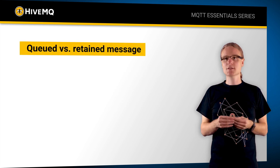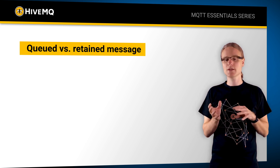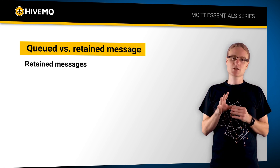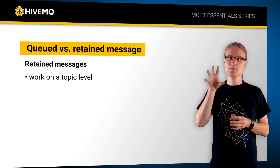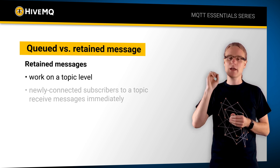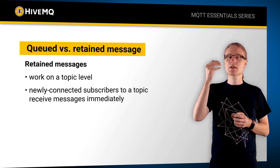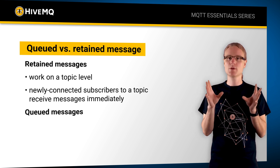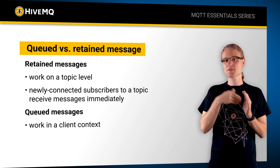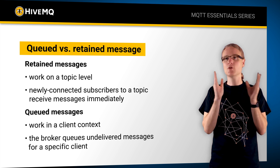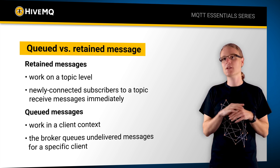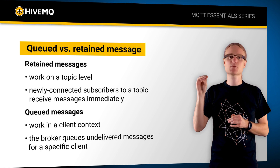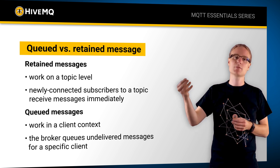A common question is when to use queued messages versus retained messages — these are really two distinct concepts. Retained messages operate at the topic level and don't care about client context at all; every new subscriber will get the retained message delivered directly. Queued messages, by contrast, are always per-client context — if a client has a persistent session and goes offline, the broker will queue all messages that specific client missed. Retained messages have a global context on the whole broker, and only the last message per topic is persisted.